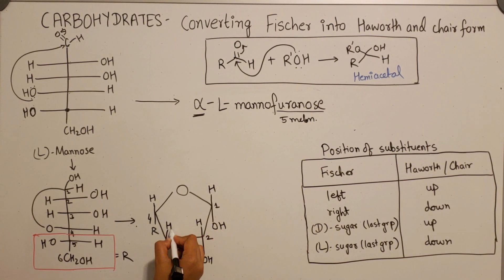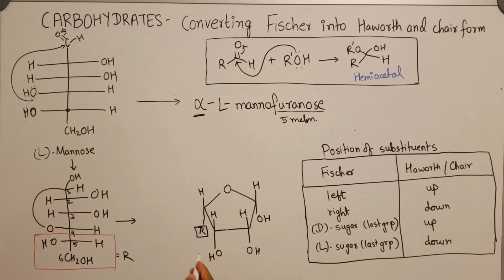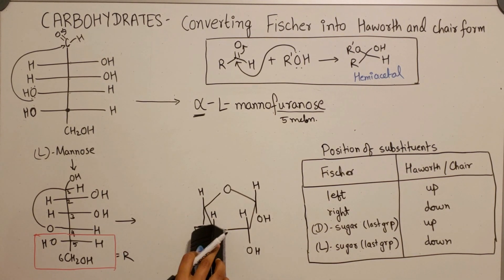Because carbon one is the anomeric center and the question asks for the alpha anomer, the hydroxy group goes on the bottom and H is on the top. Fill the rest of the substituents with hydrogens, and let's elaborate the R group.